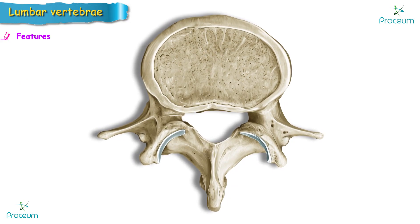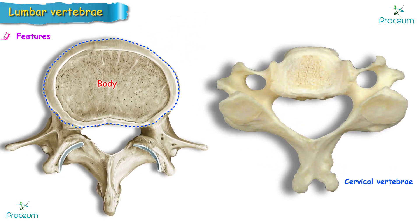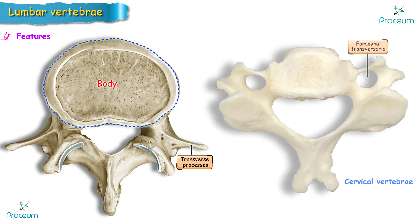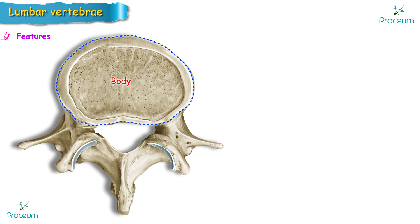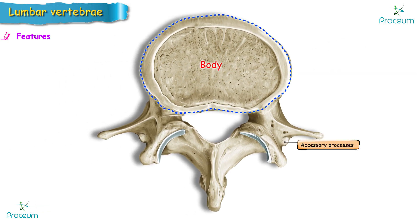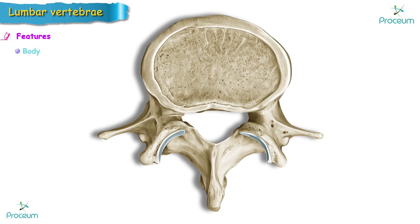Features of the lumbar vertebrae: they have massive reniform or kidney-shaped bodies. The absence of foramina transversaria in the transverse processes is noted, as is the absence of costal facets in the body. The presence of accessory and mammillary processes and thick quadrilateral spinous processes are also appreciated features.